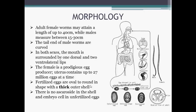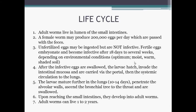Fertilized eggs are oval to round in shape with a thick outer shell. The fertilized egg image shown here has a thick outer shell. There are no ascarocytes in the shell of unfertilized eggs. Ascarocytes are any group of glycolipids that contain the sugar ascarizol, found in some nematode worms.